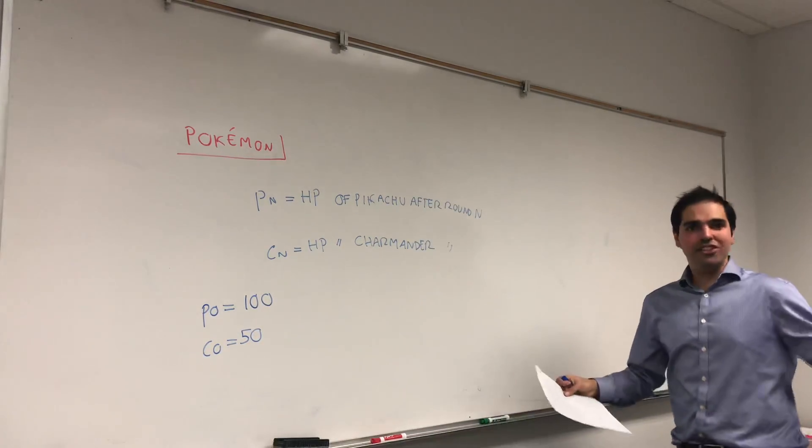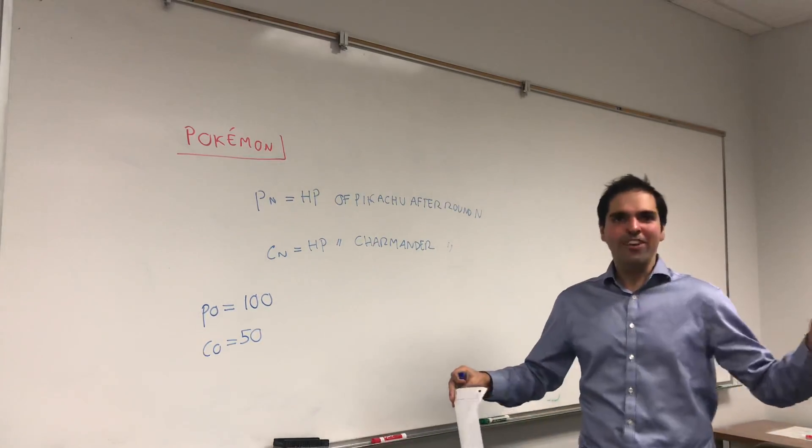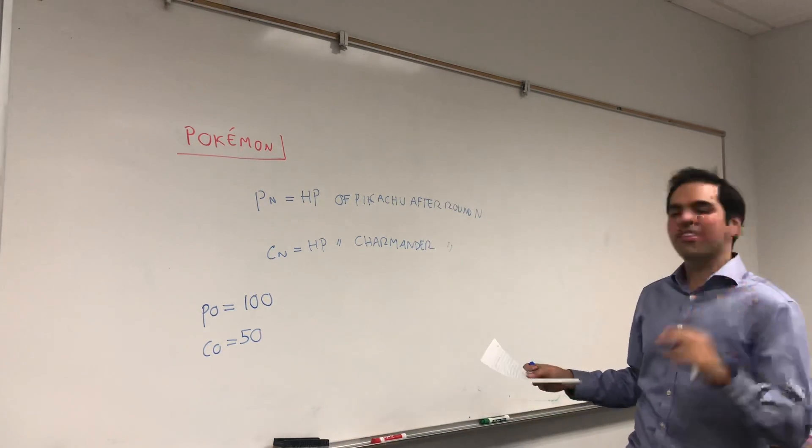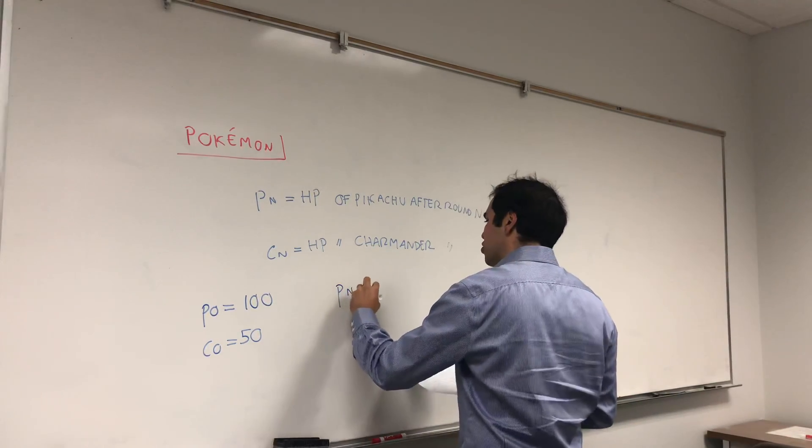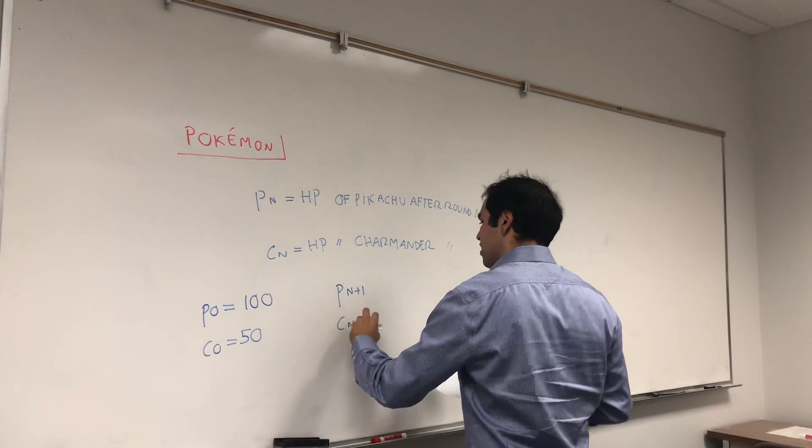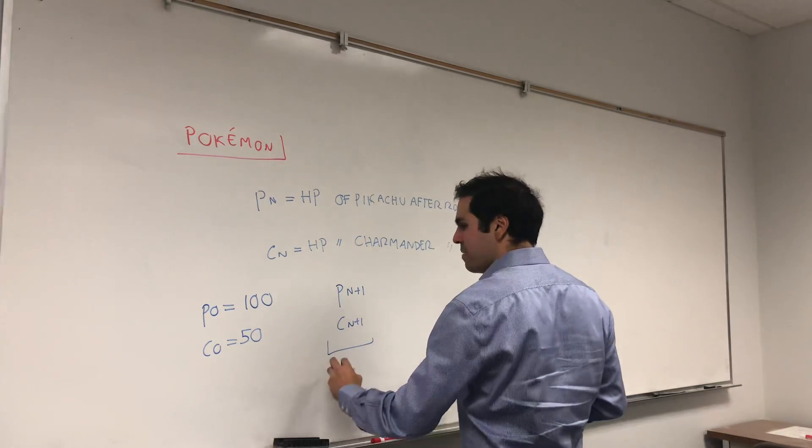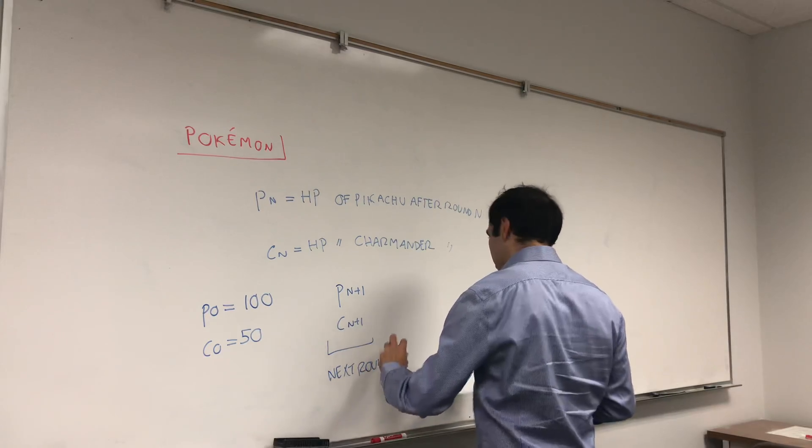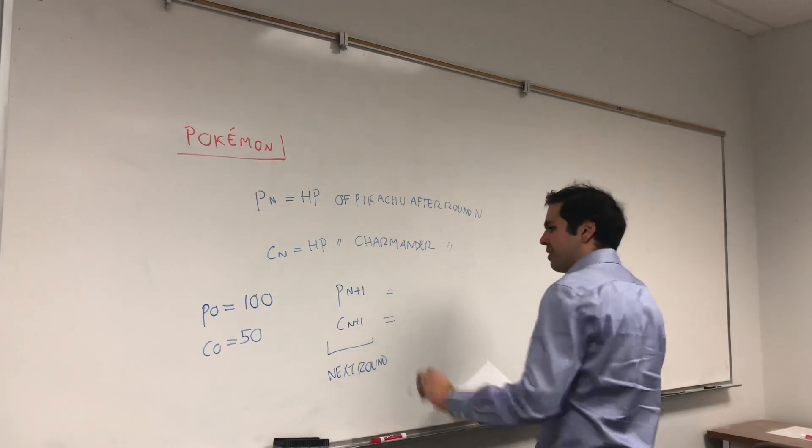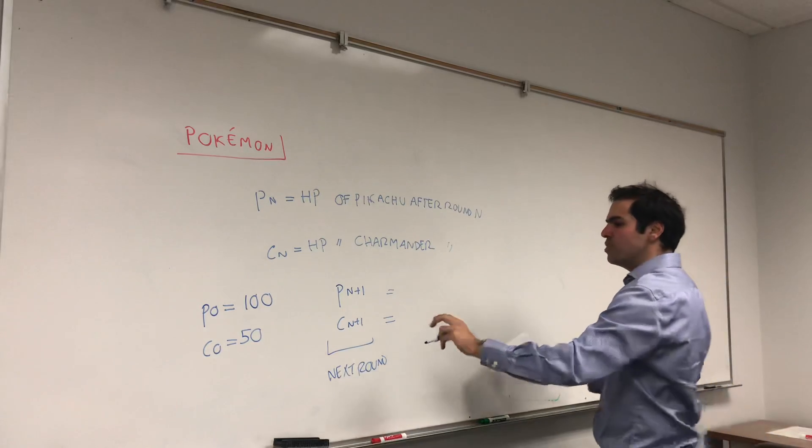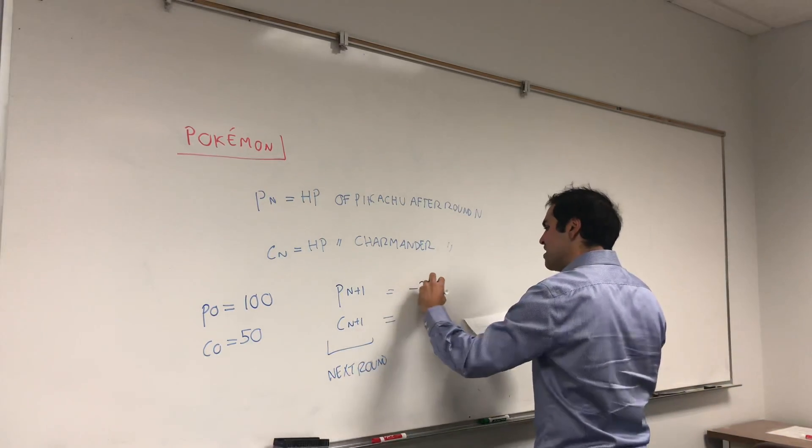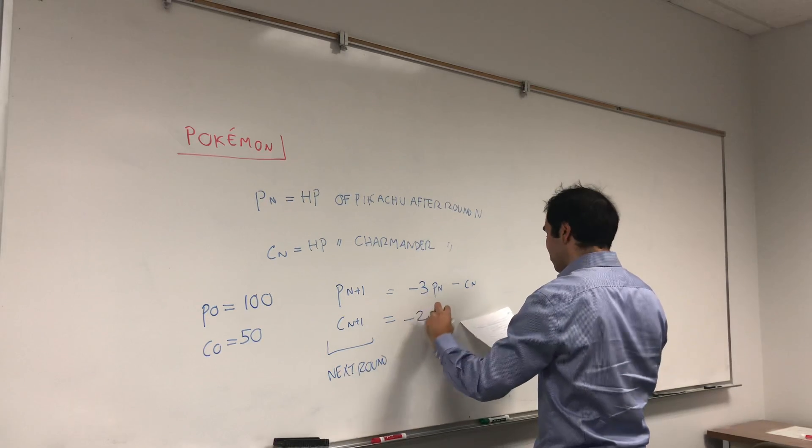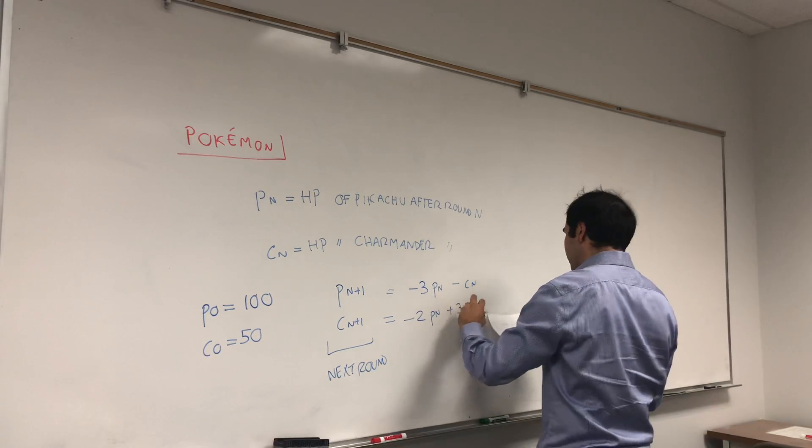Suppose Pikachu and Charmander, they're very boring. They always do the same moves and those moves are controlled with the following dynamical system. Assume the HP of Pikachu and Charmander in the next round, they're related to the following. Suppose PN plus 1 equals minus 3PN minus CN and CN plus 1 is minus 2PN plus 3CN.